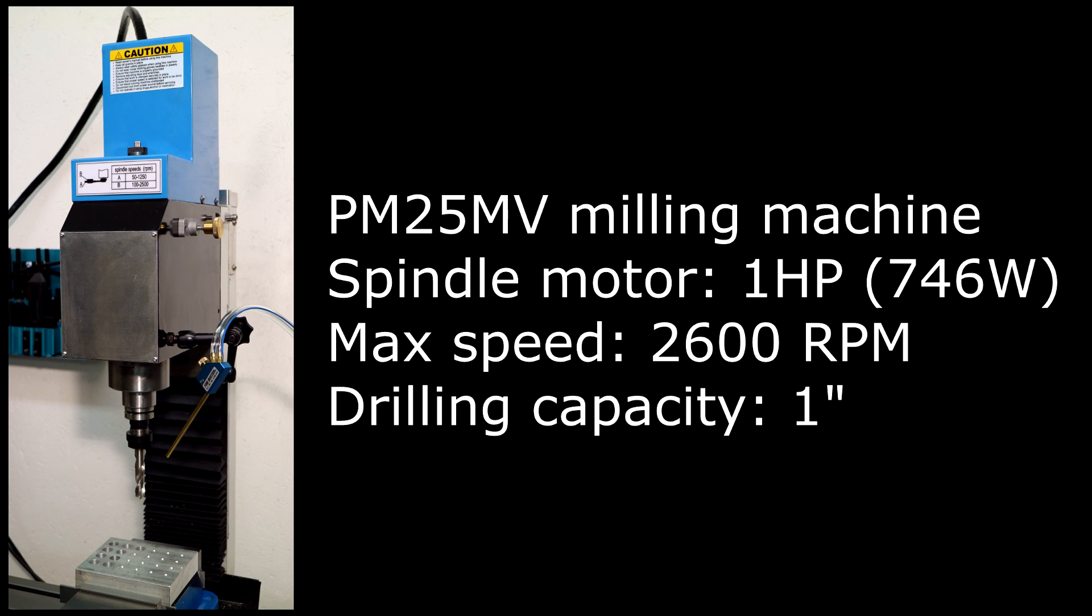The milling machine that the power meter is attached to is a modified precision Matthews 25 MV. The spindle motor is a 1 horsepower DC motor. The maximum speed of the spindle is 2600 RPM. The advertised drilling capacity is 1 inch, but to drill 1 inch without step drilling is overly optimistic.